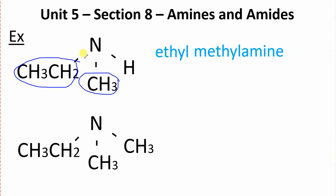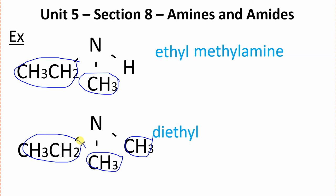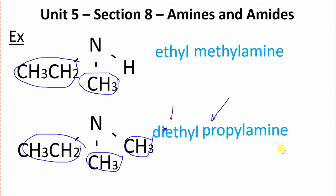And in our last example, we've got a couple of methyl groups. So, we'll use dimethyl. And then, we have a propyl group. So, alphabetically, that should say dimethyl — put a little M in there for methyl — dimethyl, and then propylamine. So, M comes before P in the alphabet, apparently, if you sing it. And that's all I have to say about amines.